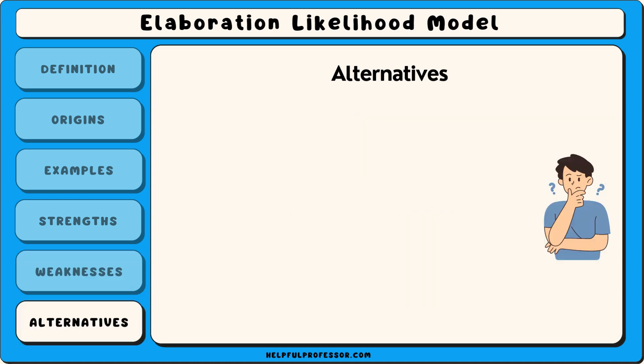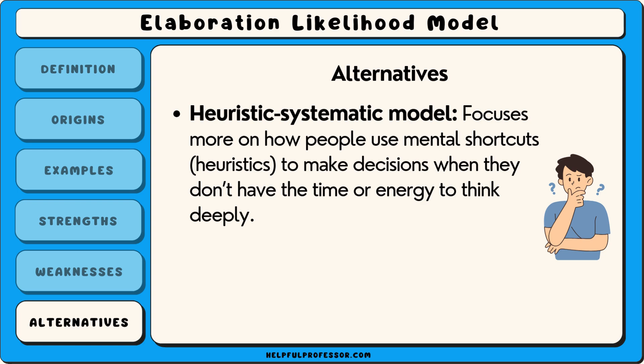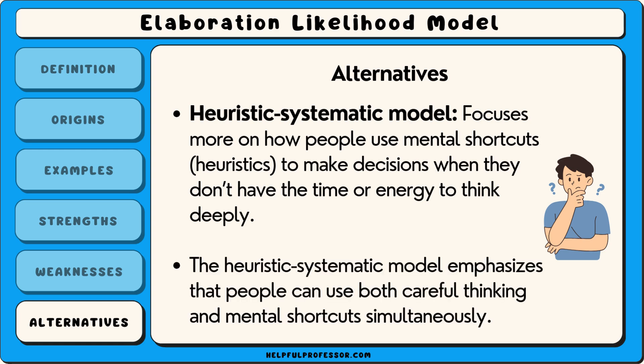An alternative to the elaboration likelihood model is the heuristic systematic model, which also explains how people process information, but focuses more on how people use mental shortcuts — heuristics — to make decisions when they don't have the time or energy to think deeply. While the two models are similar, the heuristic systematic model emphasises that people can use both careful thinking and mental shortcuts simultaneously, offering a slightly different view on how persuasion works.